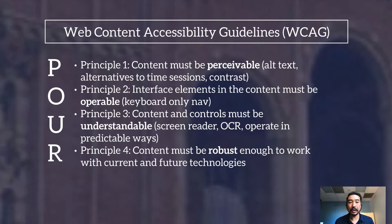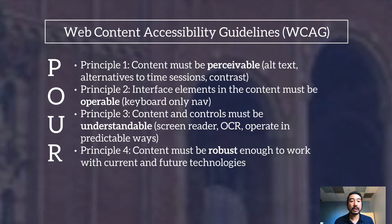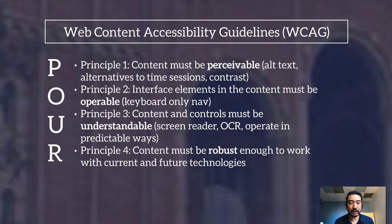WCAG is broken down into four basic principles known as POUR — P-O-U-R. Principle number one is P, which stands for Perceivable. It includes alt text, alternative time-based media sessions, and making sure your color contrast is correct. The next one is O, which is Operable — meaning keyboard-only navigation. You must be able to navigate your website using keyboard only, and other assistive technologies must be navigable as well.